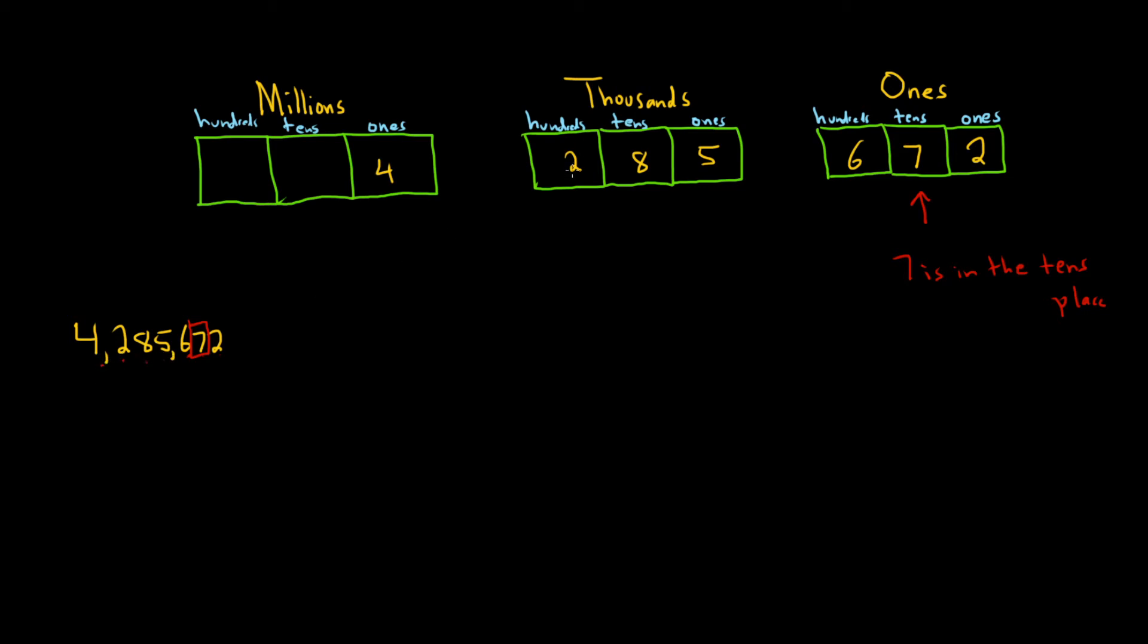For example, 2 would be in the hundred-thousands place. 4 would be in the millions place.